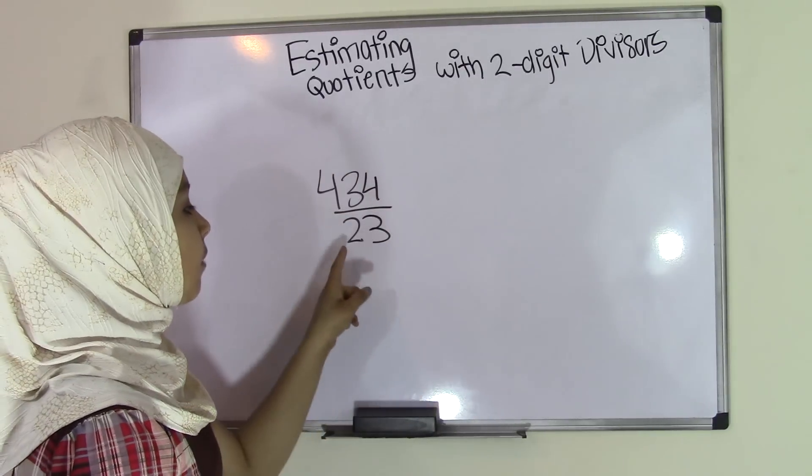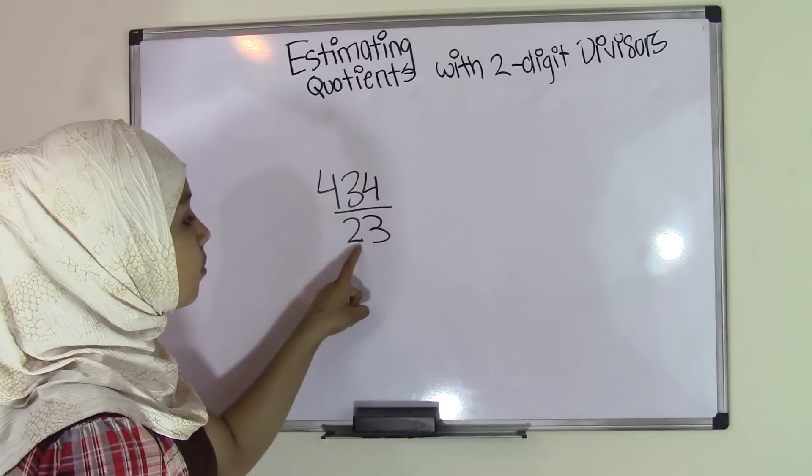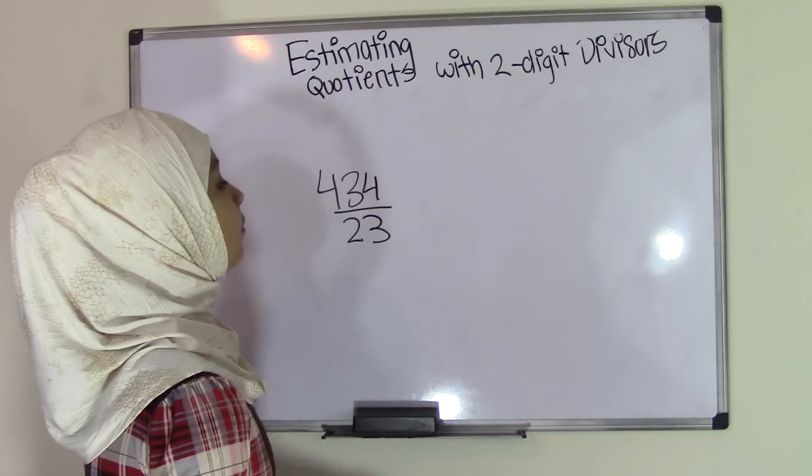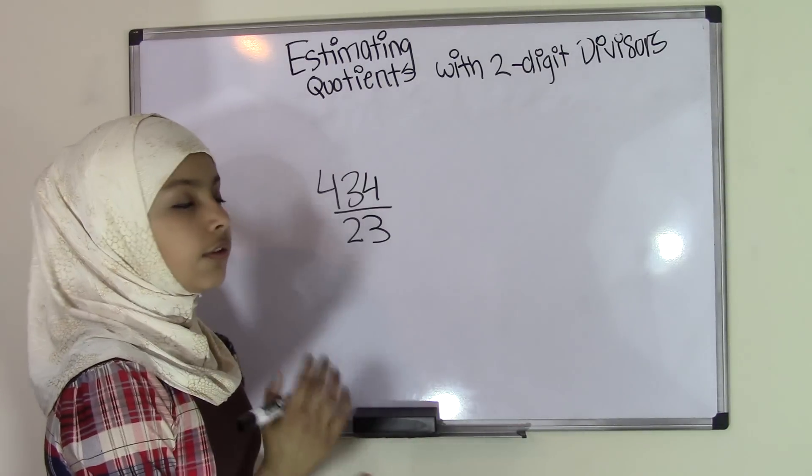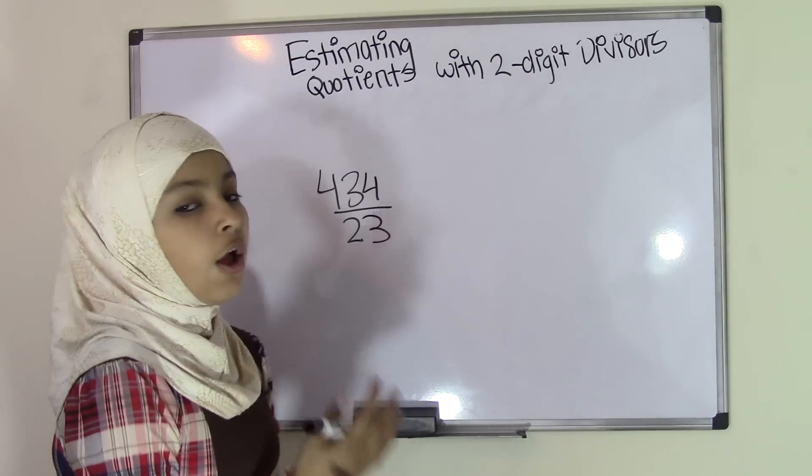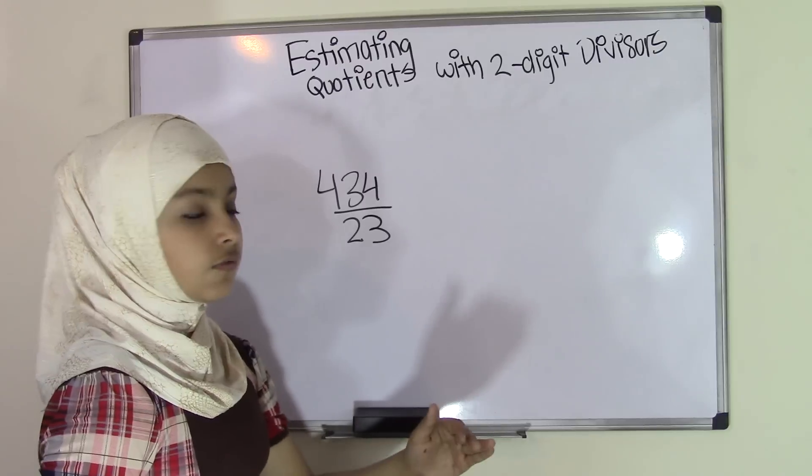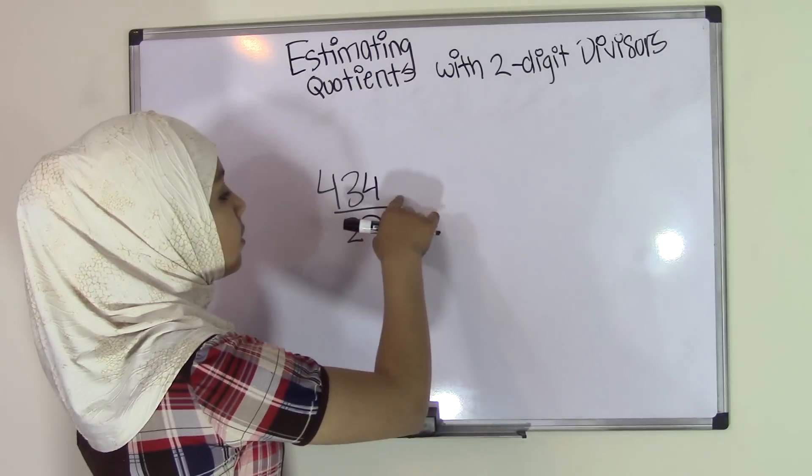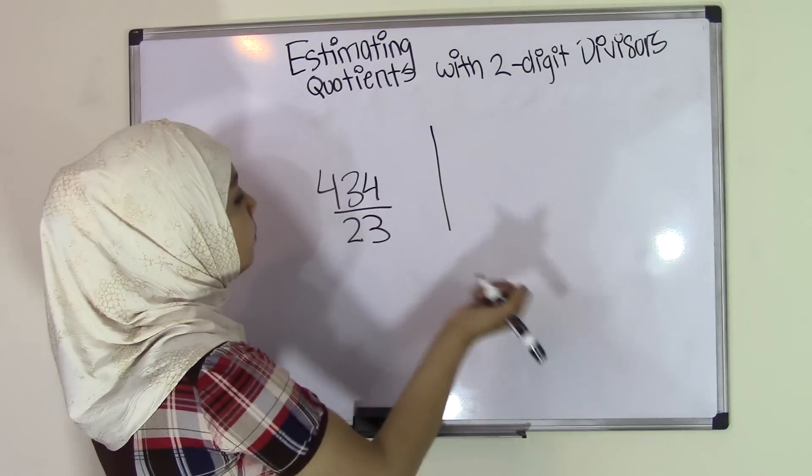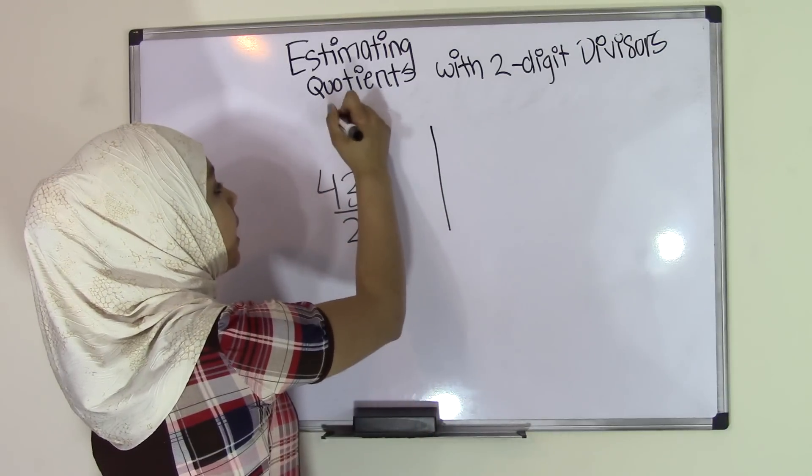Now since we're working with two-digit divisors, we know that 23 is two digits because two is one digit and three is one digit. So one plus one is two. Now the next thing we're going to do is make number ranges. You could call them number lines, but I prefer to call them number ranges because you're making a range of data here. First we're going to start off with our dividend, 434.